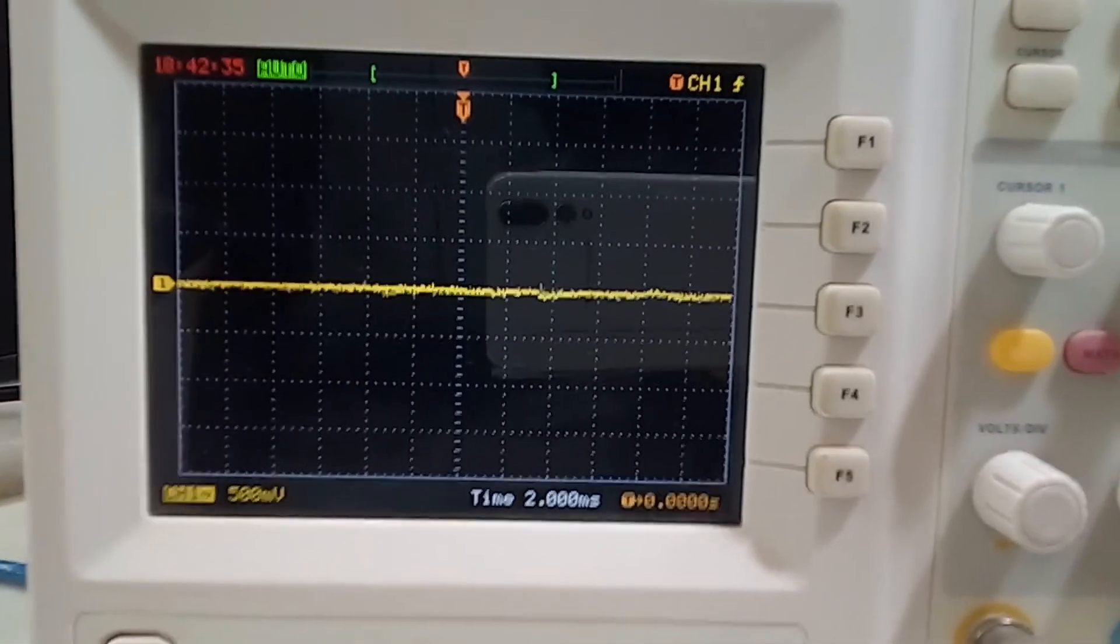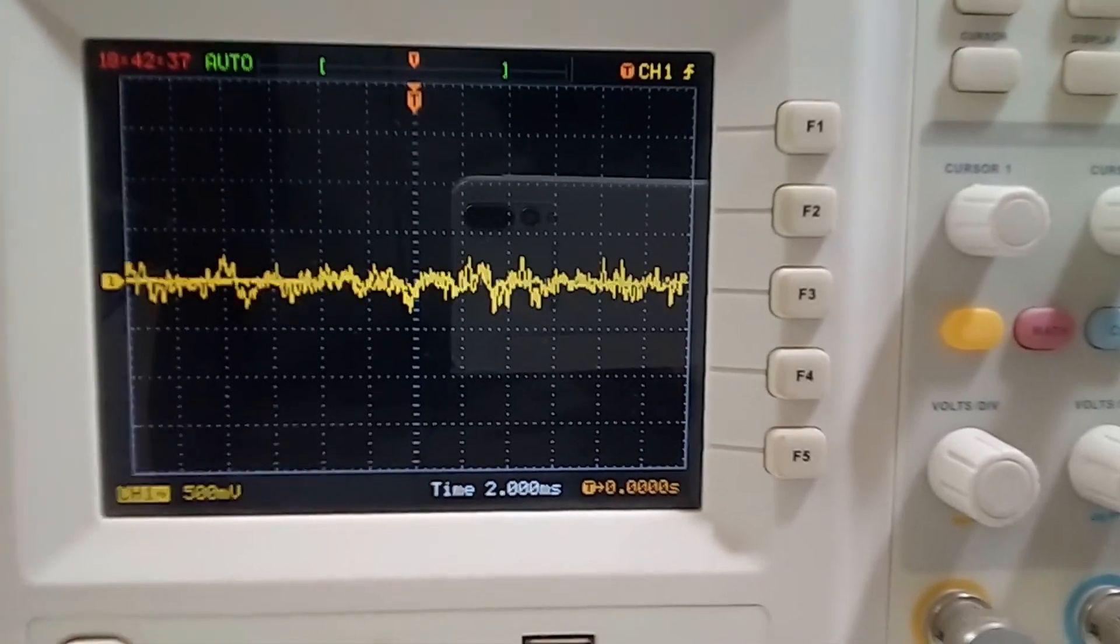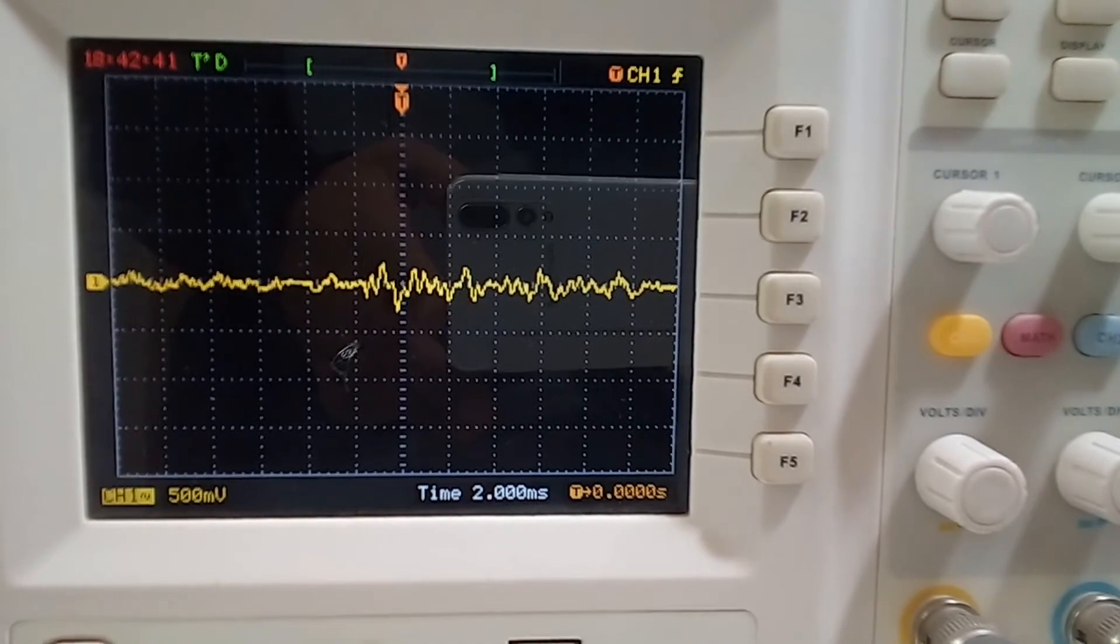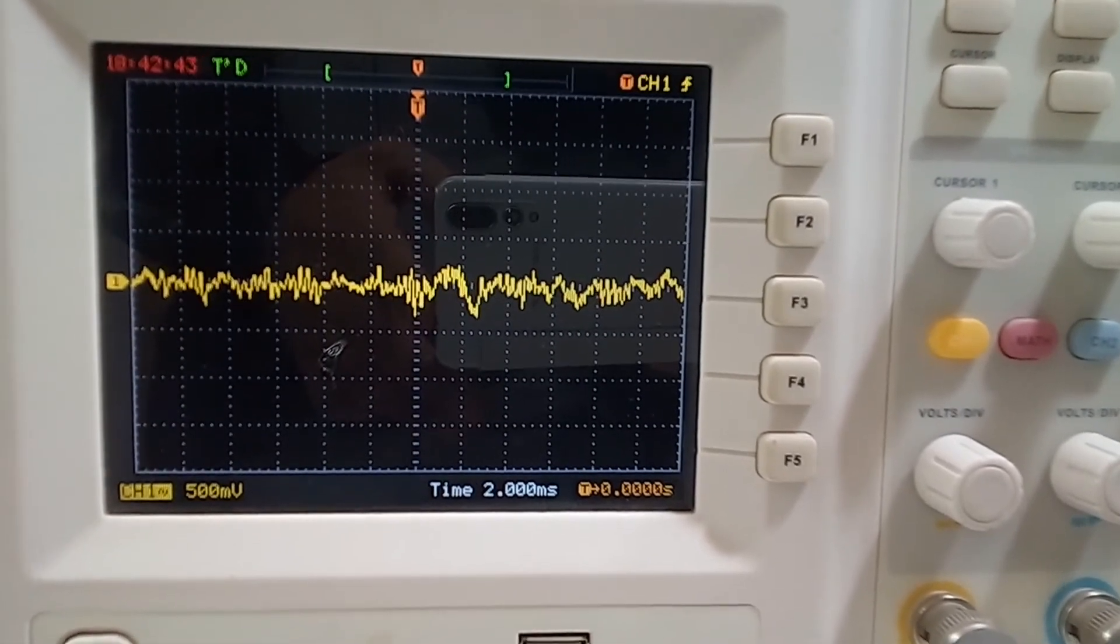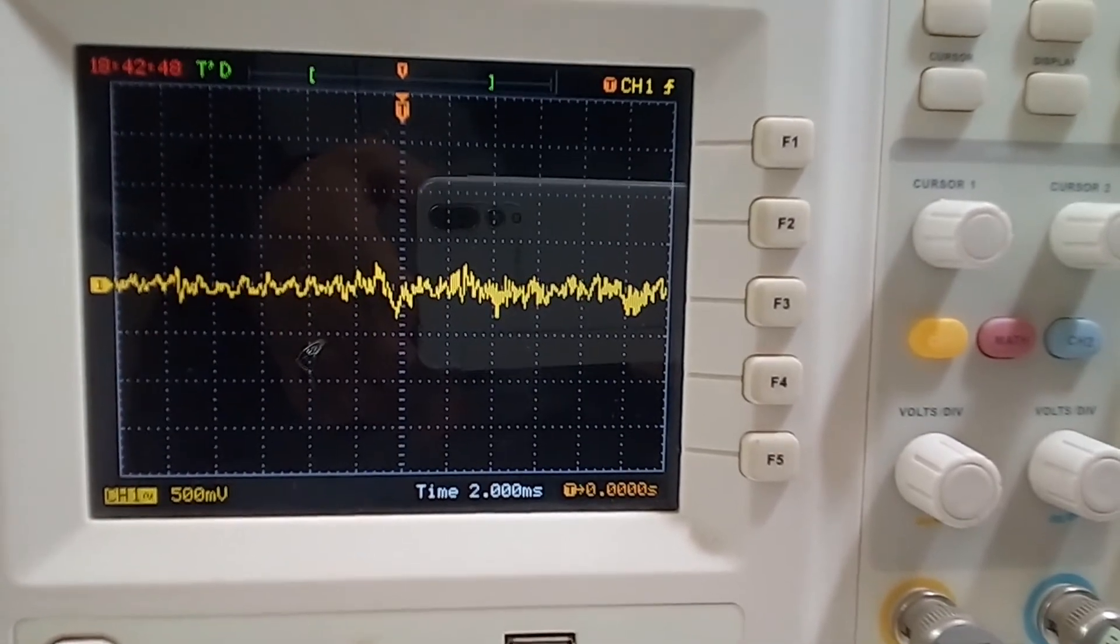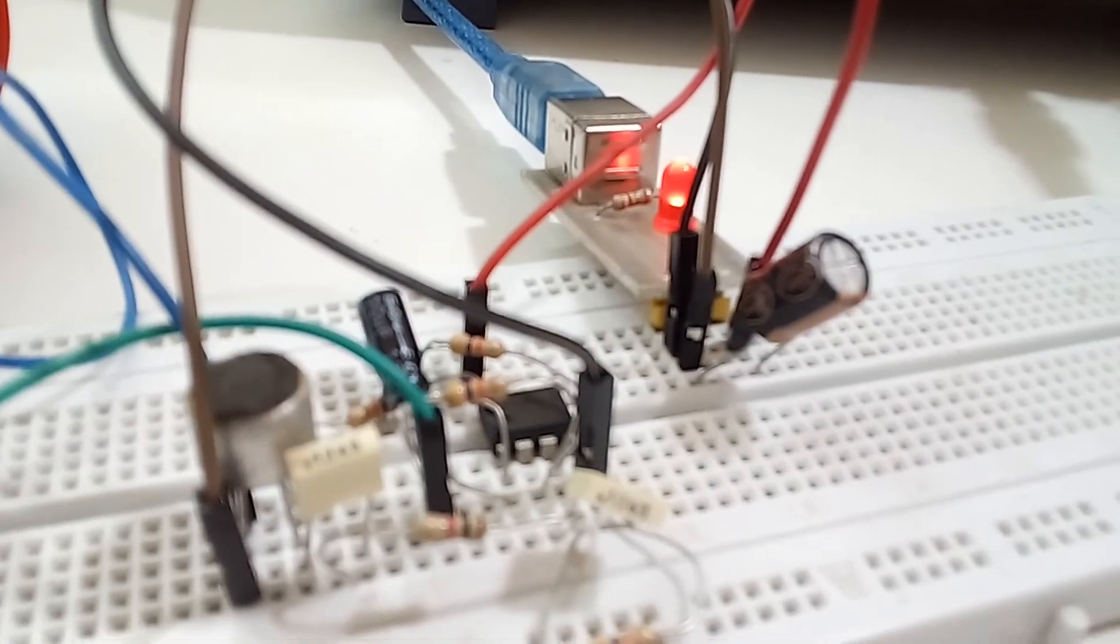Let's get back to the oscilloscope now. As you can see, the circuit is now working fine. The oscilloscope is displaying the audio signal captured by the microphone.